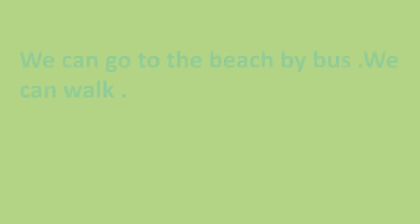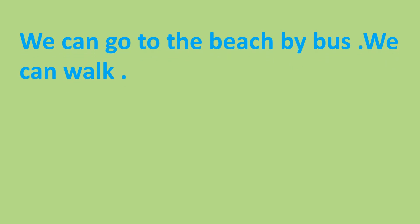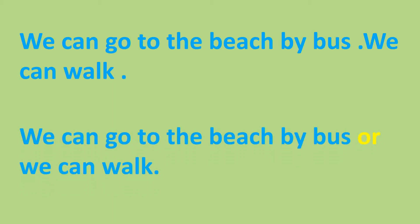Next: 'We can go to the beach by bus. We can walk.' There are two choices given, so we use 'or.' We can go to the beach by bus or we can walk. Note both sentences start with 'We,' so we can also remove the repeated word: 'We can go to the beach by bus or can walk' — that is also perfectly correct.